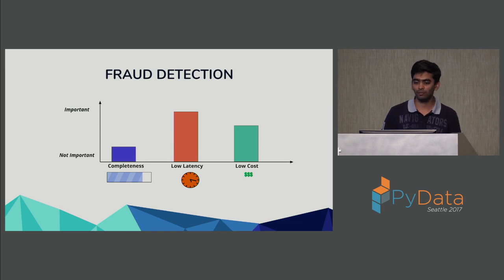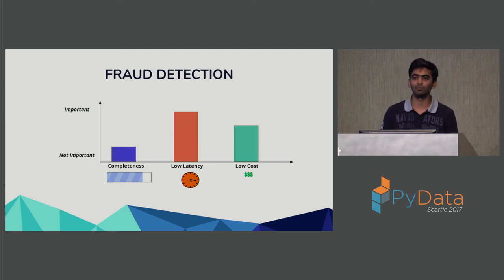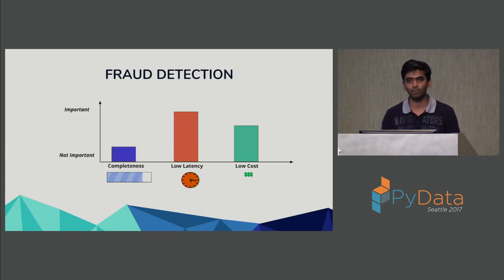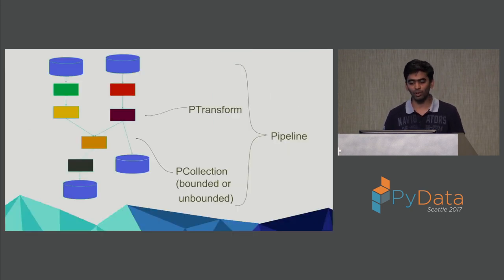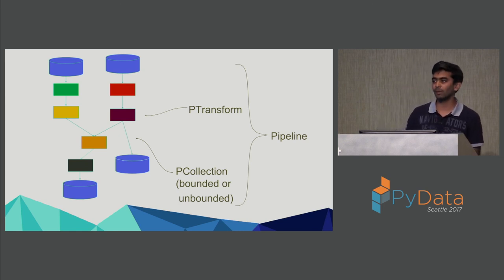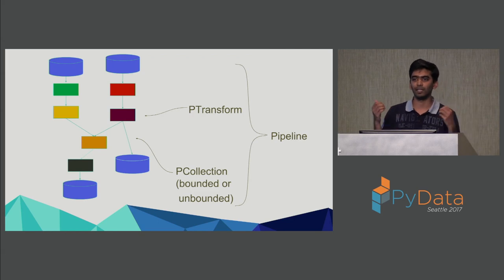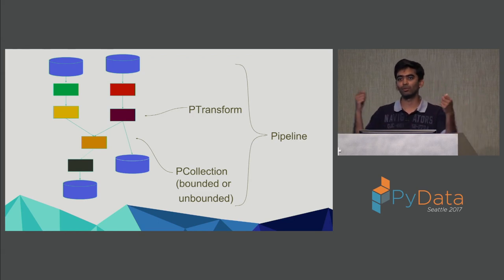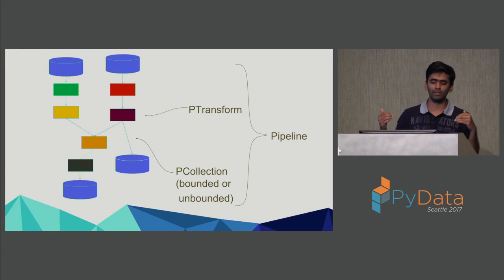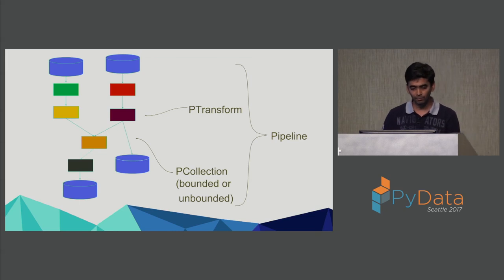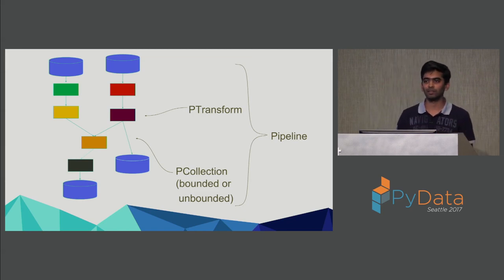Now that we've seen how different pipelines interact between exactness and latency, let's talk about how the Beam model tries to build a paradigm where it lets the user decide what choices to make. Before we dive into the Beam model, let me clarify some terms. A pipeline is an execution DAG — the steps that the user asks the input data to go through, such as two input streams going through transformations, joining somewhere, then outputting to a sink like a database or text file.